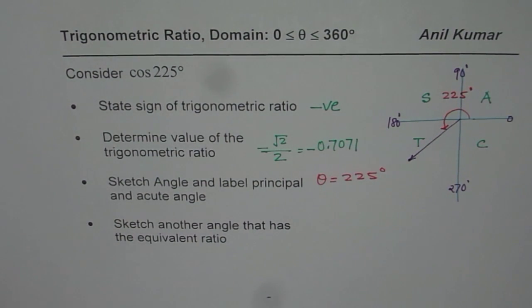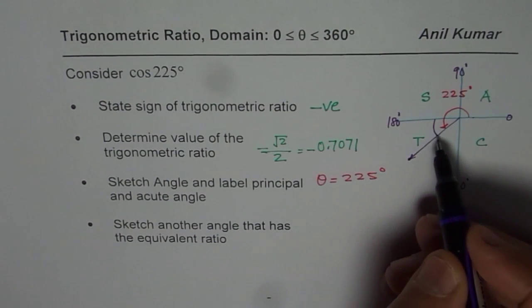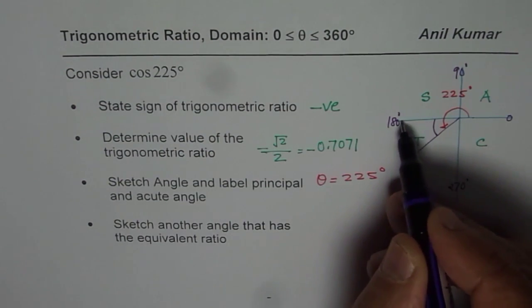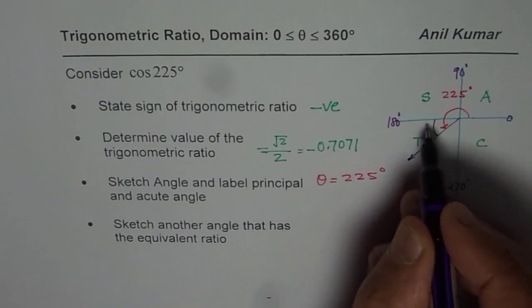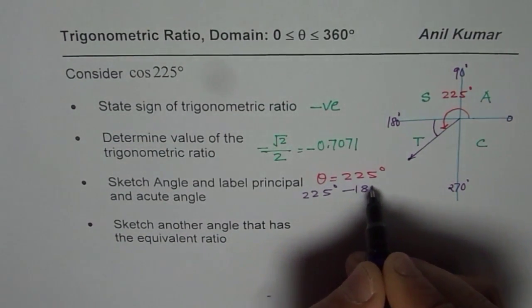And now, let us find what is the acute angle. Now, to find the acute angle, what we should do is, we should always measure it with the horizontal. So, that is the acute angle. Acute angle is always less than 90. And it is the angle made by the terminal arm and the horizontal axis. So, in this case,